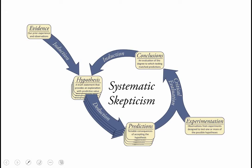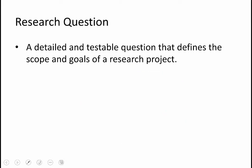This type of diagram is a good representation of a lot of hypothesis-driven research, but doesn't adequately describe all types of science, and we need to make some modifications in some cases. Nearly all research will begin with a research question — a detailed and testable question that defines the scope and goals of a project.